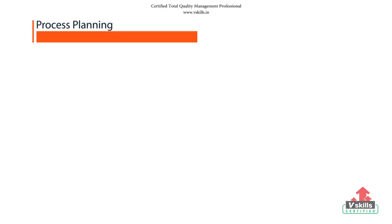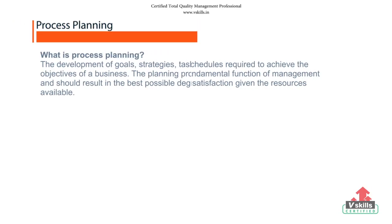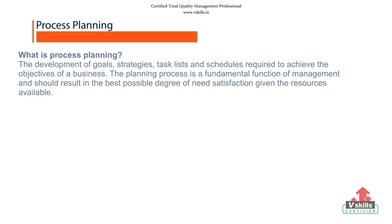Now we move on to the subtopic process planning. What is actually process planning? The development of goals, strategies, tasks, lists and schedules required to achieve the objective of a business. The planning process is a fundamental function of management and should result in the best possible degree of need satisfaction given the resources available. Processes need to be planned in order to be successful, and corporate goals and visions can be deployed to departmental or process levels.